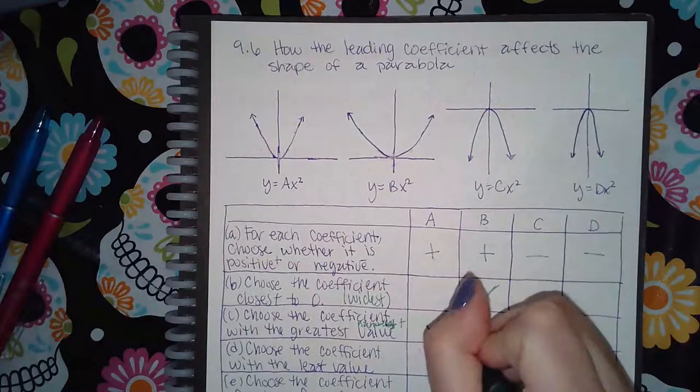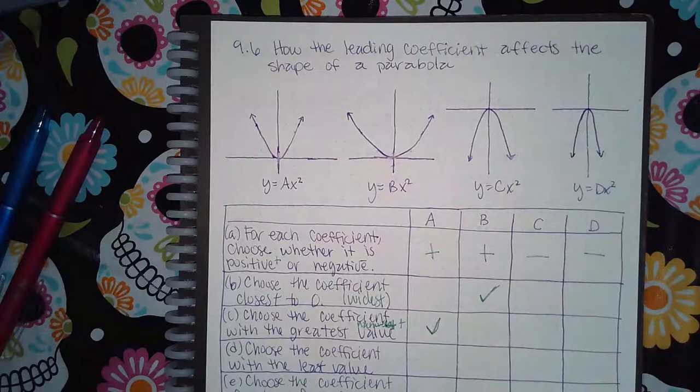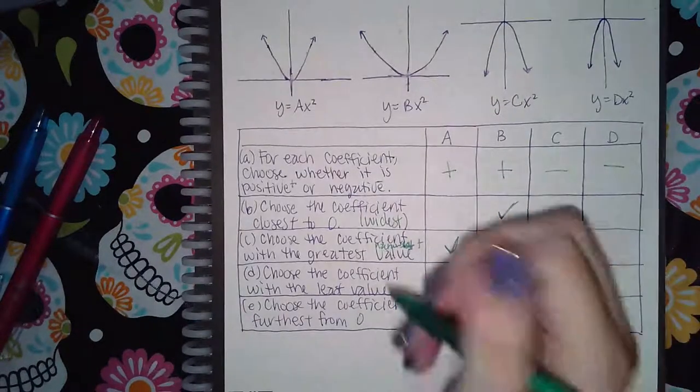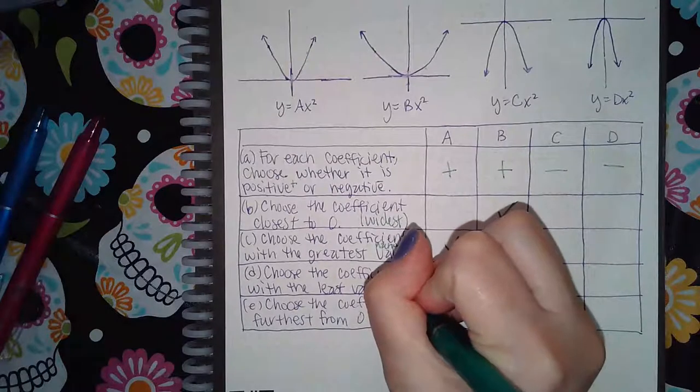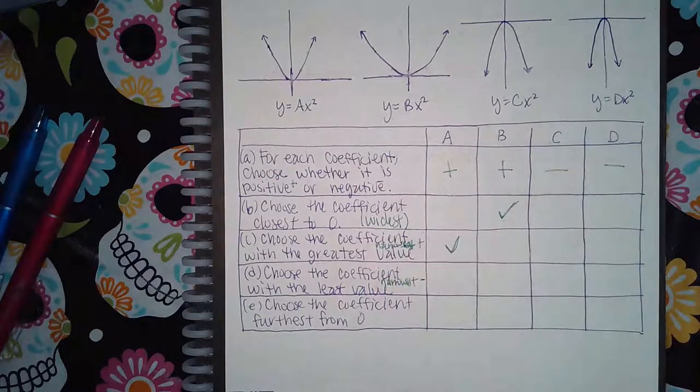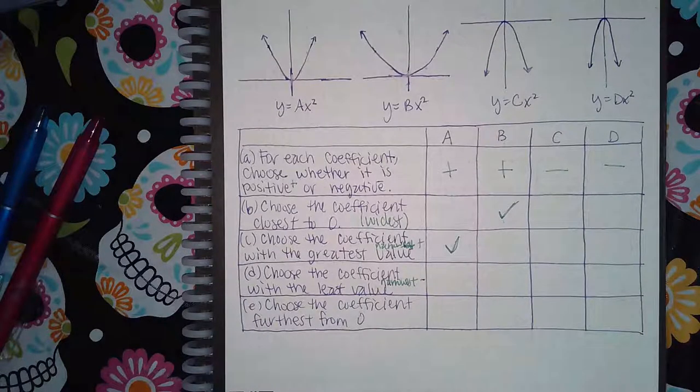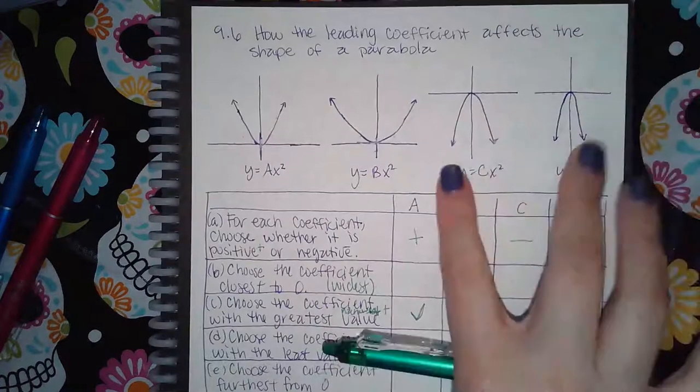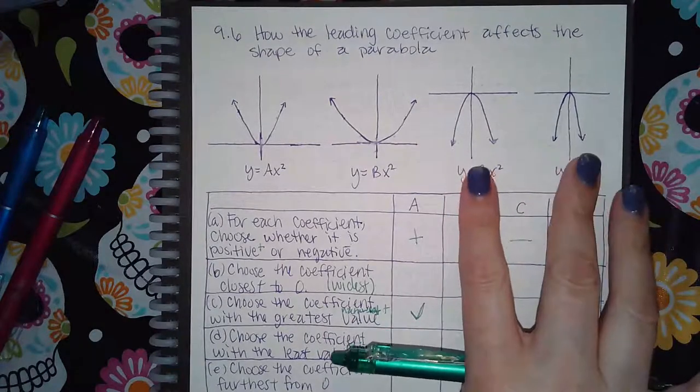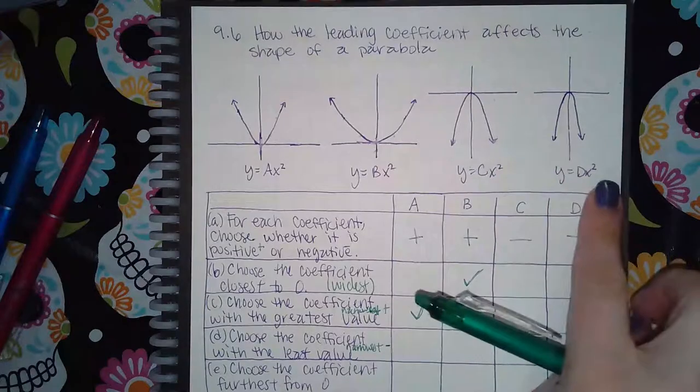Then it says choose the coefficient with the least value. So the least value, you want the narrowest negative coefficient. These two are the ones with negative coefficients. You want the one that looks the narrowest between these two and that would be D.